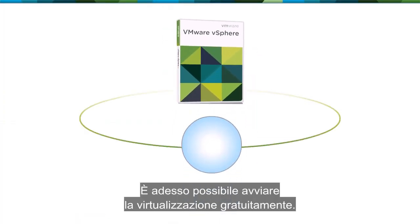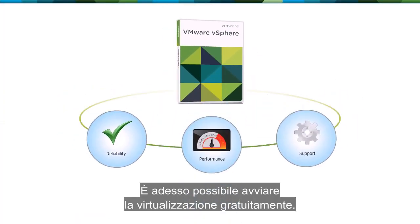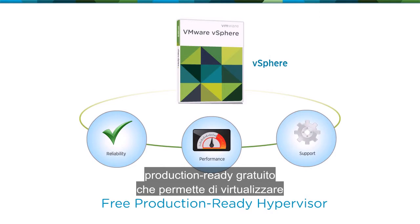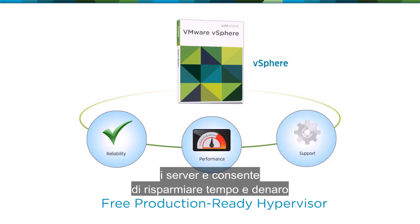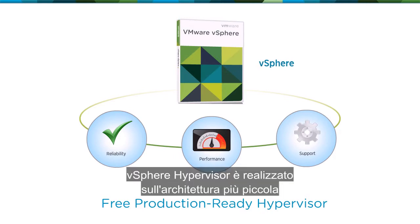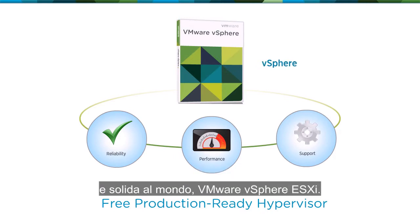Now you can get started with virtualization for free. VMware vSphere Hypervisor is a no-cost, production-ready hypervisor that lets you virtualize your servers, helping you save time and money on managing your IT infrastructure. vSphere Hypervisor is built on the world's smallest and most robust architecture, VMware vSphere ESXi.